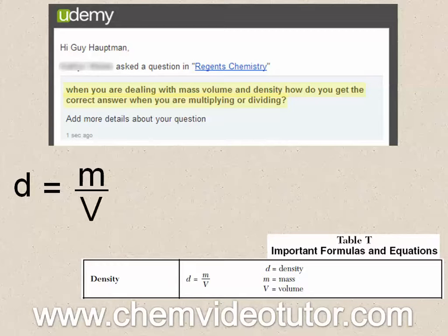Let's make up some numbers that we know will work out mathematically, such as 12 grams for the mass and 6 milliliters for the volume. 12 grams divided by 6 milliliters equals 2 grams per milliliter.